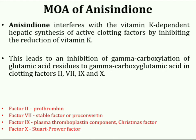Mode of action of anisindione: anisindione inhibits the reduction of vitamin K, by which it interferes with vitamin K-dependent hepatic synthesis of clotting factors. This leads to an inhibition of gamma-carboxylation of glutamic acid residues to gamma-carboxyglutamic acid in clotting factors II, VII, IX, and X. Gamma-carboxyglutamic acid is a calcium-binding amino acid and is required for the function of vitamin K-dependent proteins.